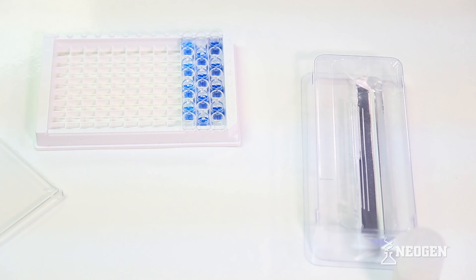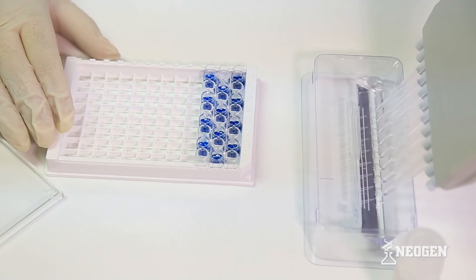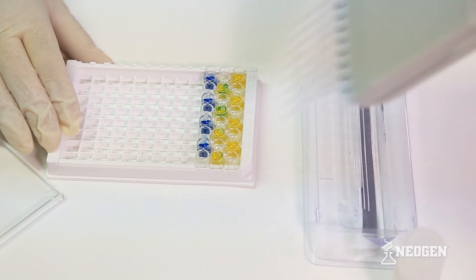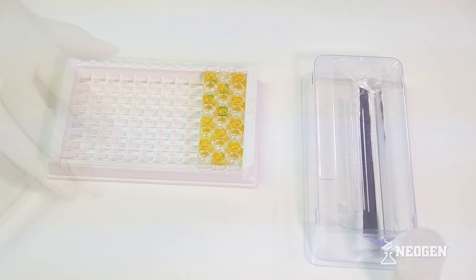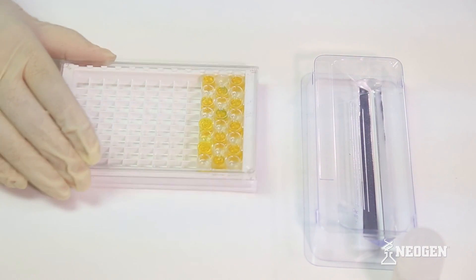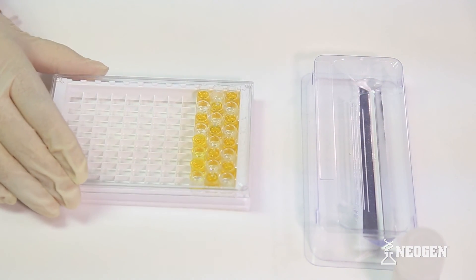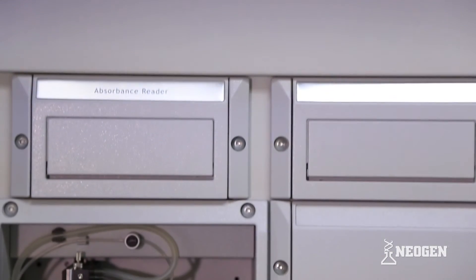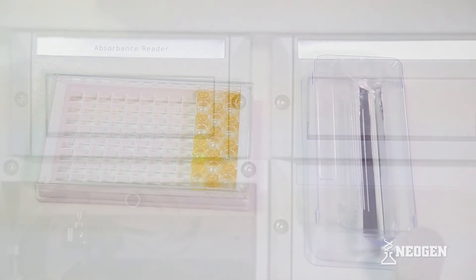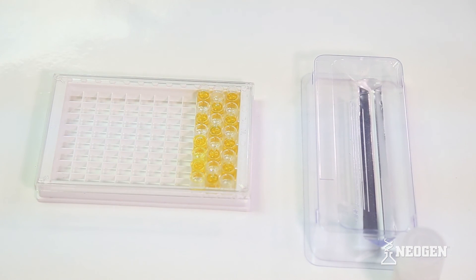When 30 minutes has elapsed, use a multi-channel pipette to add acid stop to each well to stop the reaction. Mix the plate gently for a few seconds and read the plate at 450 nanometers. Results are inversely proportional. The absence of drug in the sample will result in strong color development, whereas the presence of drug will result in decreased or no color development.